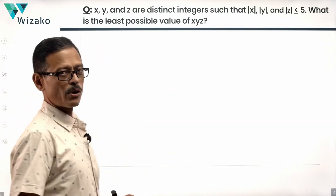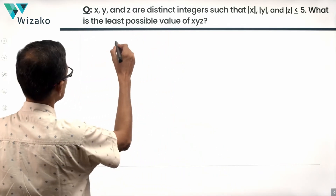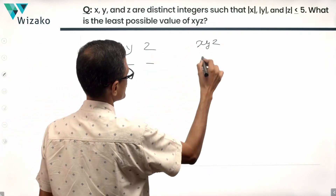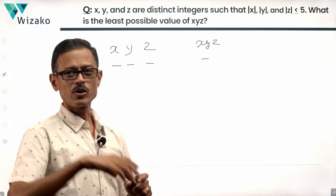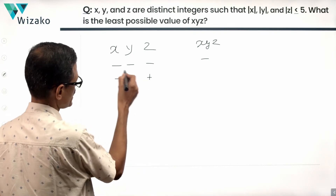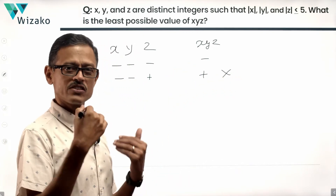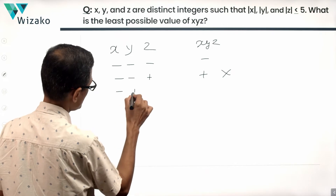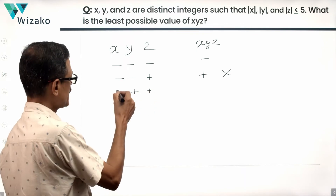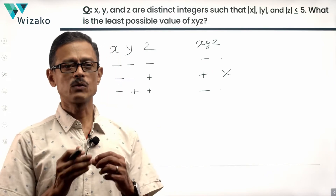We want the product to be negative. With three numbers, the product is negative when all three are negative, or when one is negative and two are positive. If all three are positive, the product is positive — ruled out. If two are negative and one is positive, the product of two negatives is positive, and times a positive remains positive — also ruled out. So either all three are negative, or two are positive and one is negative.